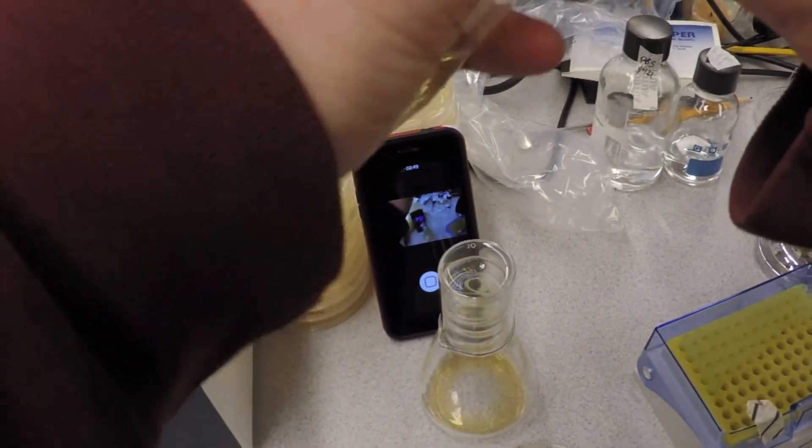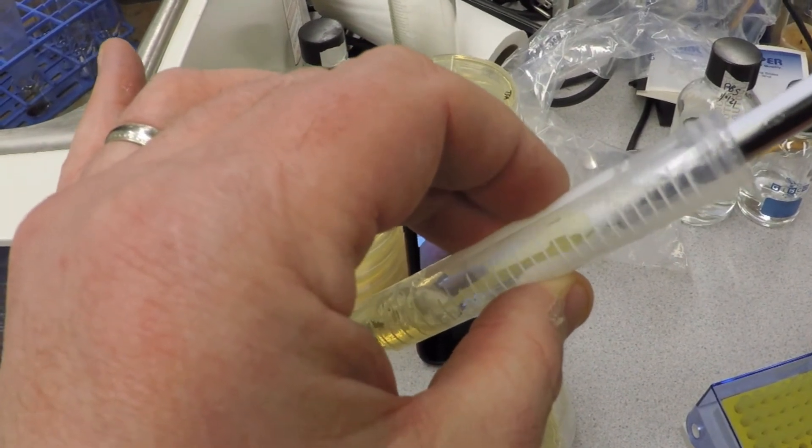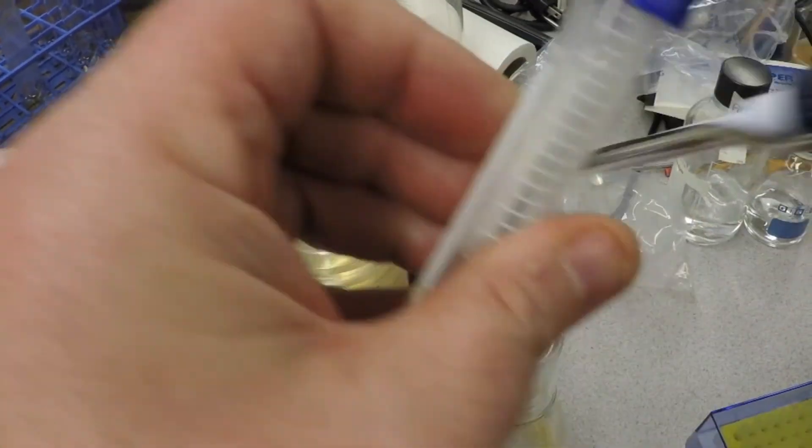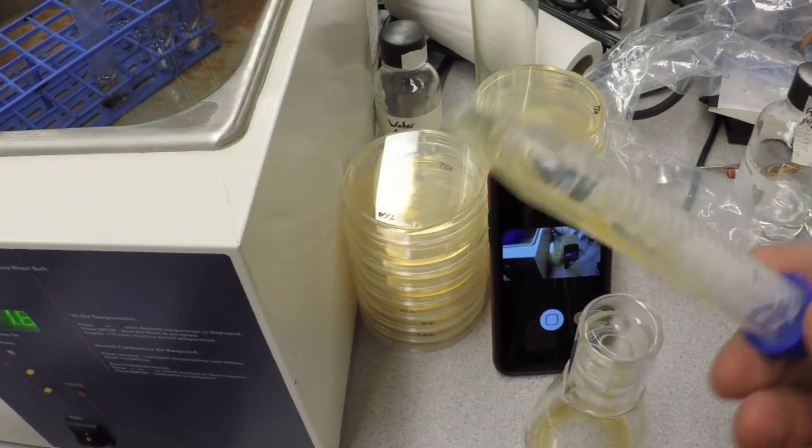And you just take it and put the kanamycin directly into the three mils of agar, pipette it up and down a few times, get it in there. I take this and close it, spin up and down a little bit. Now it's mixed. This has kanamycin in it now.